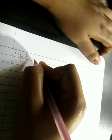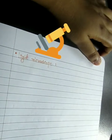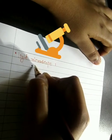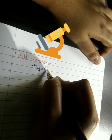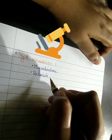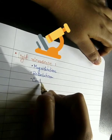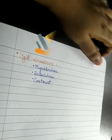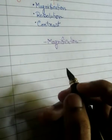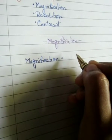There are three important parameters in microscopy: magnification, resolution, and contrast. The magnification, or linear magnification, of a microscope is defined as the ratio of the image size to the object size — i.e., specimen size.